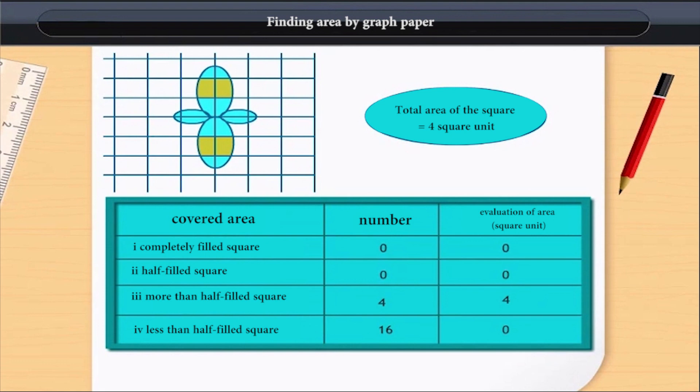Now, what should we do about squares which are less than half filled? We leave them. Hence, the total area of square is 4 square units.